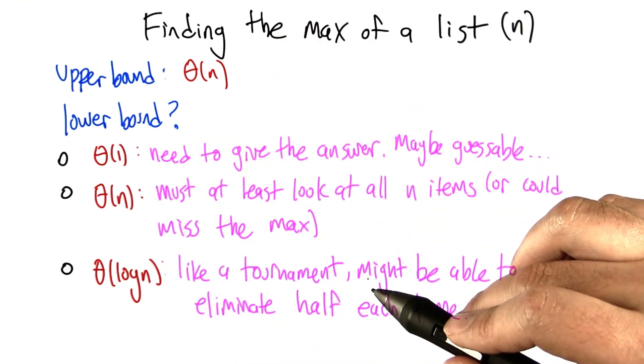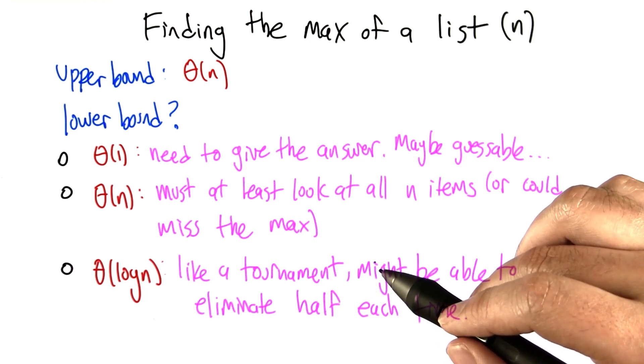So which of these do you think is the best argument in terms of a lower bound for finding the max?